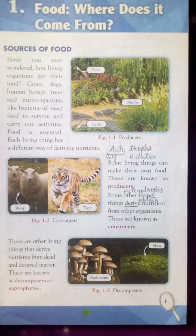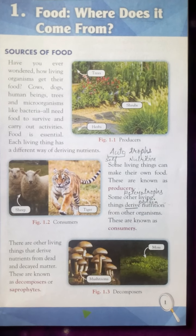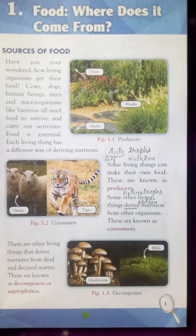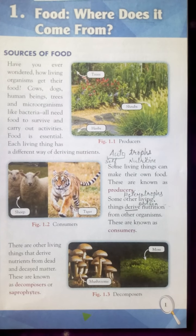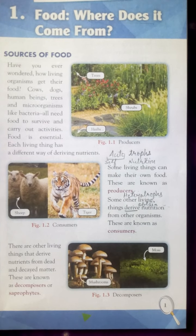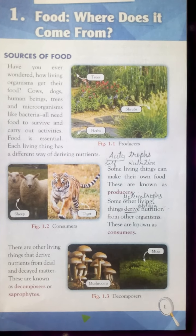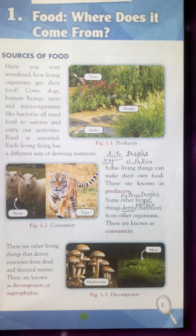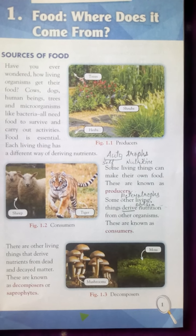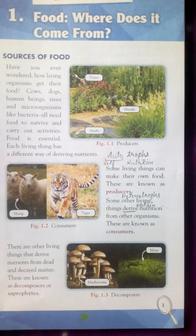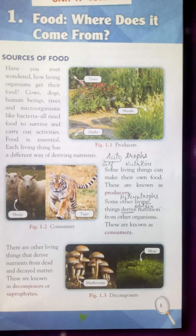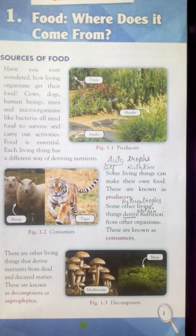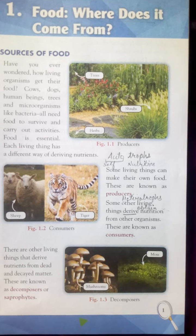The first category is autotrophs and the second is heterotrophs. The word 'auto' means self and 'trophs' means nutrition. So autotrophs are basically producers — these are living things that can prepare their own food. Examples of producers are trees, shrubs, and herbs.